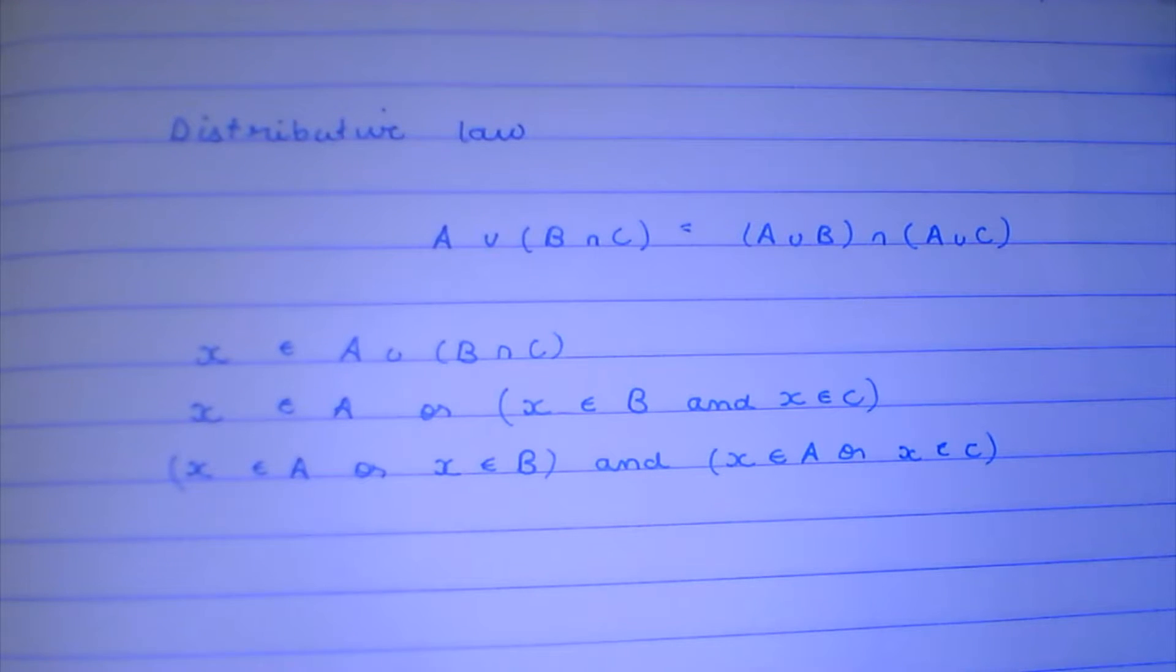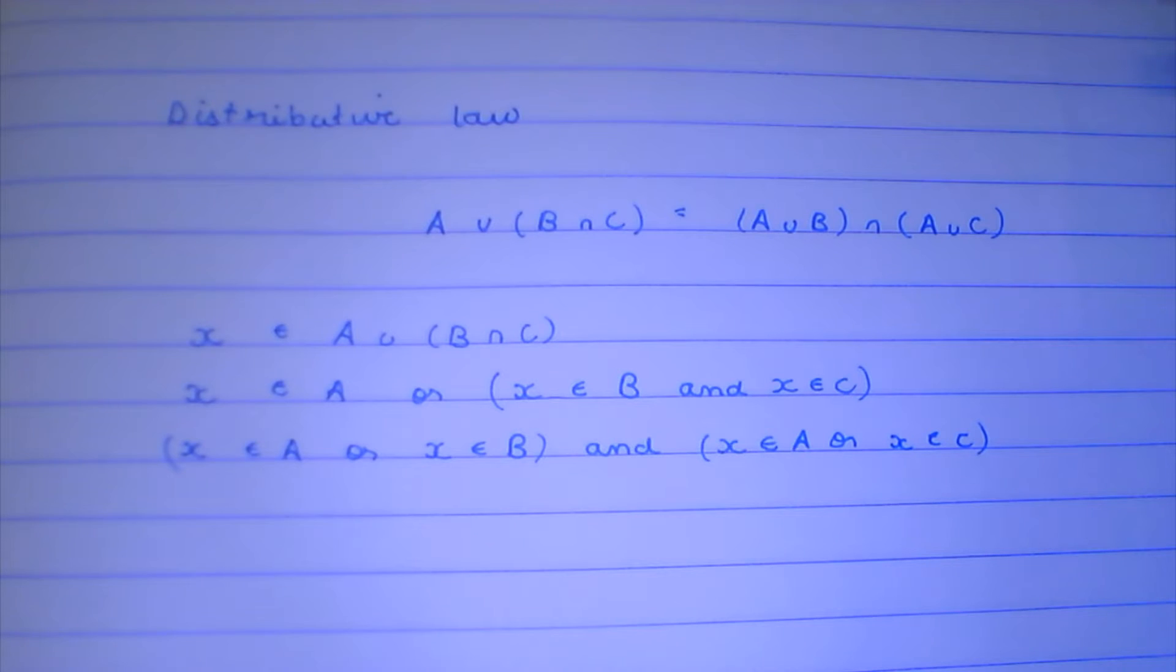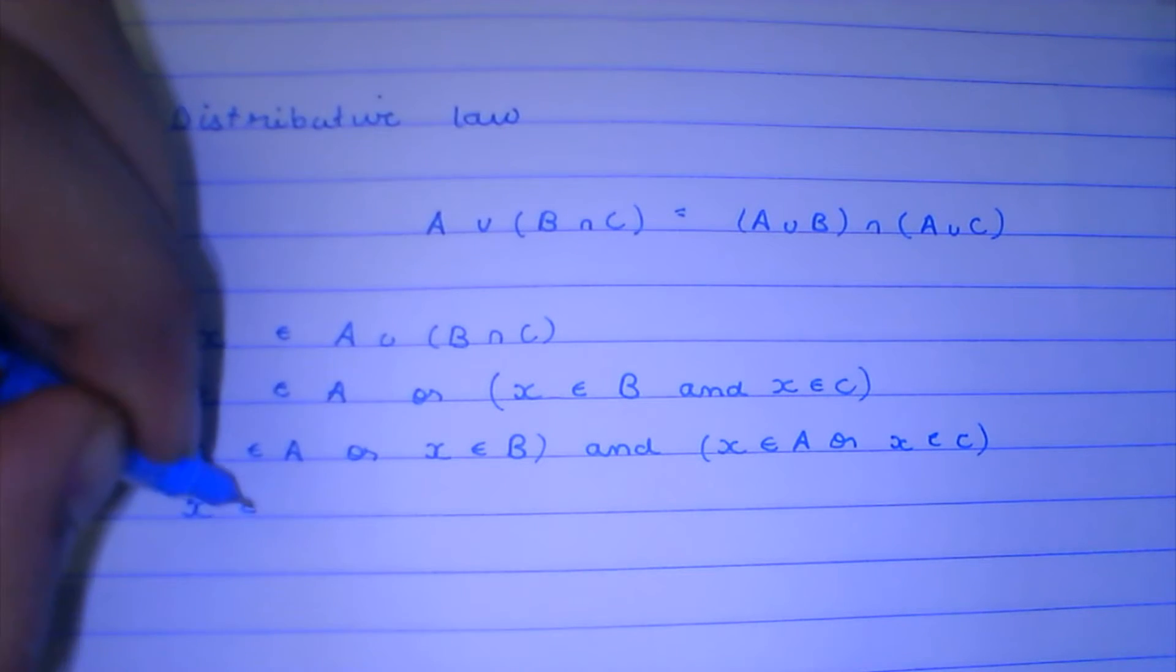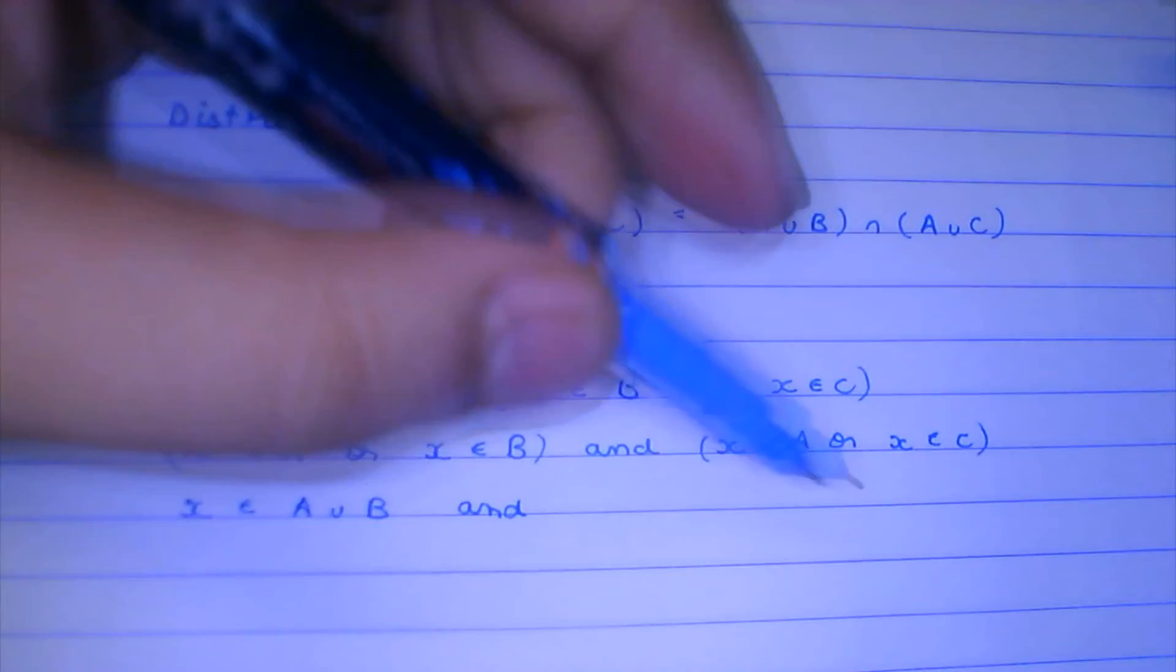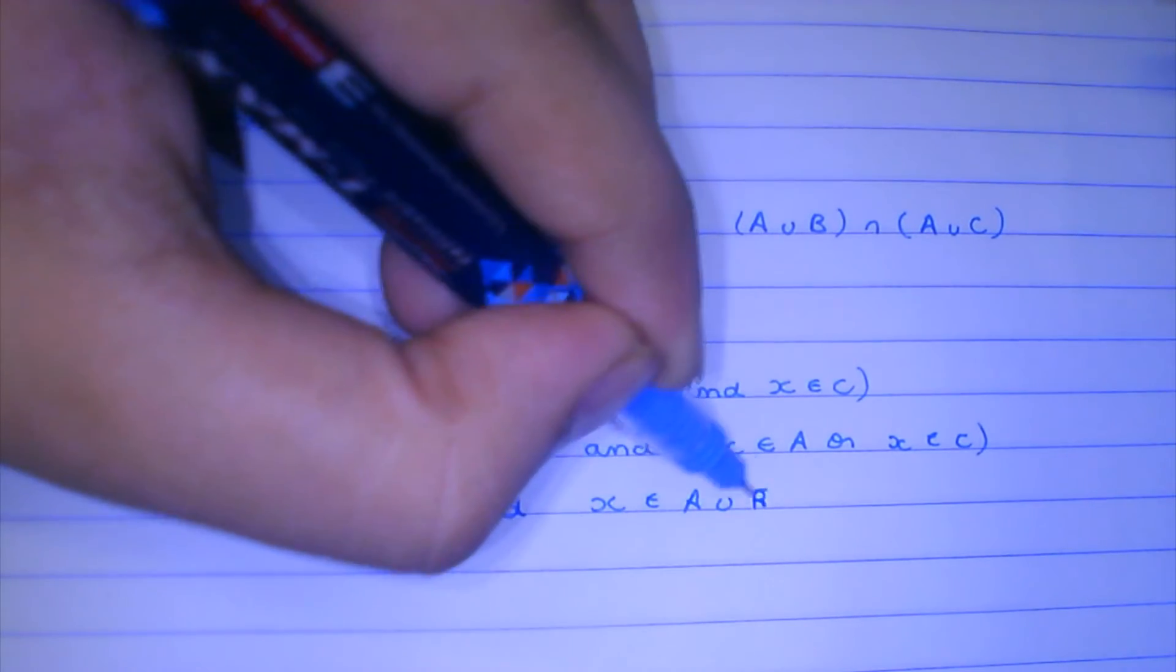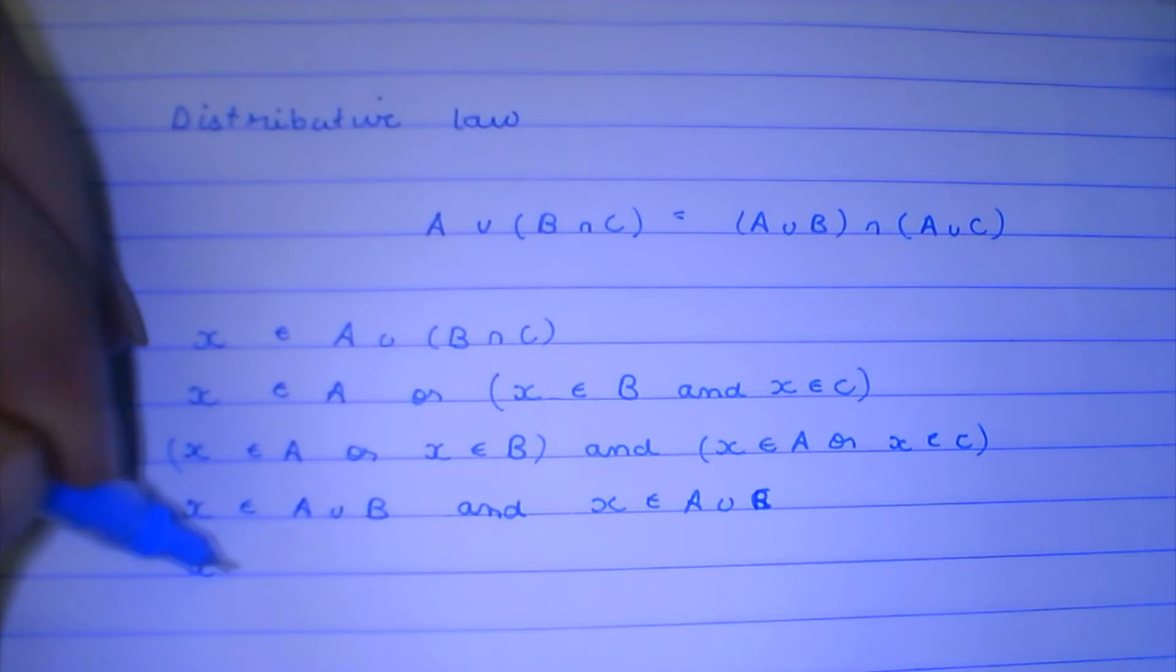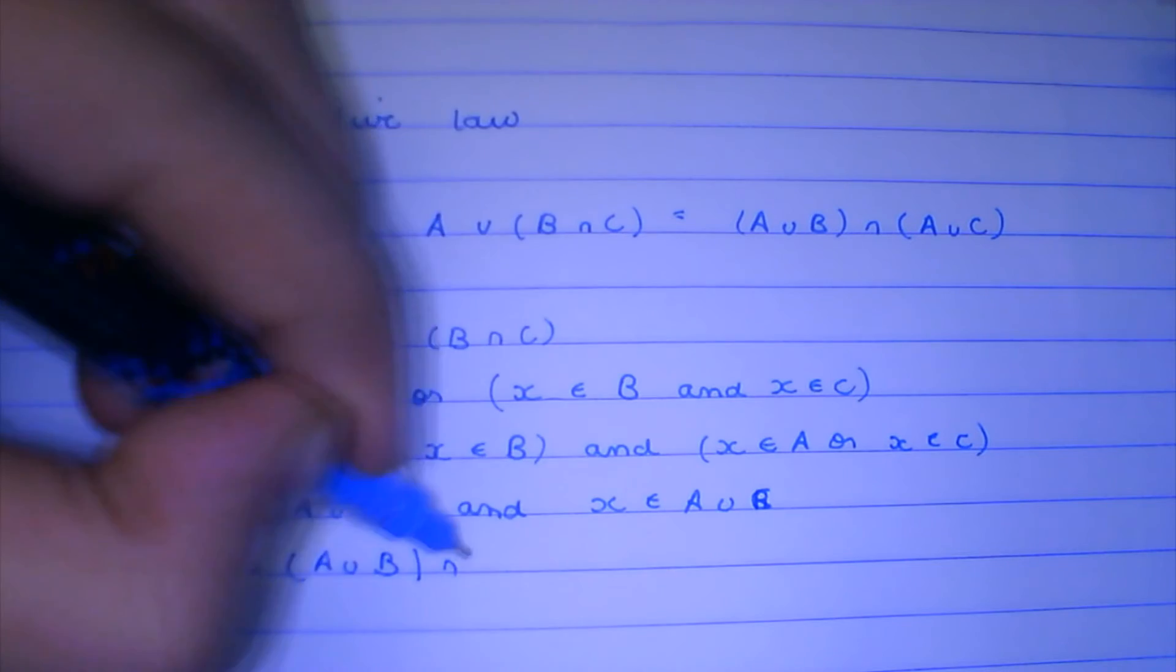Or X is going to belong to B and X is going to belong to C, which means that X belongs to A union B and X belongs to A union C.